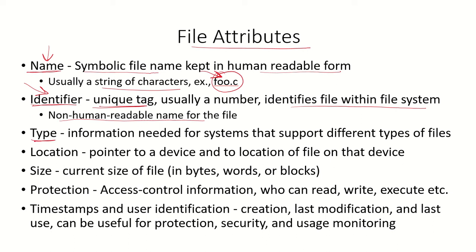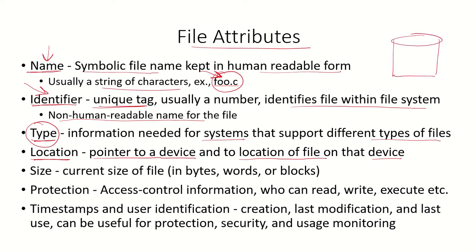The type of the file is needed for systems that support different types of files, so that the system knows how to arrange or manage the file. There is also a location attribute, which is a pointer to a device and to the location of the file on that device. For example, if a file is stored on a hard disk in a particular block or sector, the location specifies exactly where it is stored — a pointer to the device and the file's location on that device.